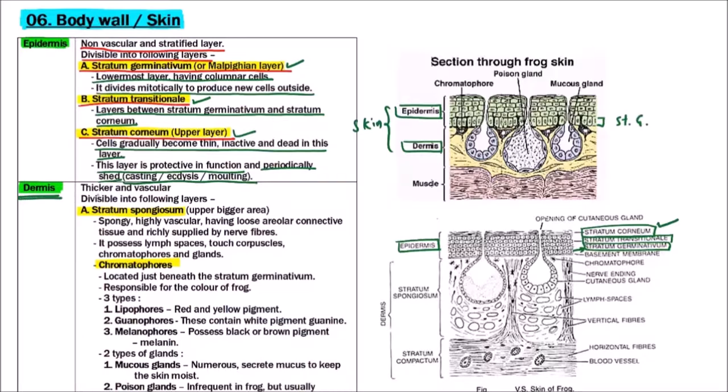Next is dermis. Dermis is thicker and vascular. Epidermis was non-vascular and thinner. We can observe that this is dermis here. It is thicker than the epidermis.